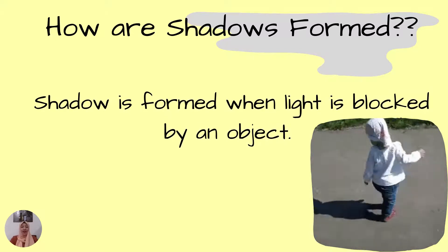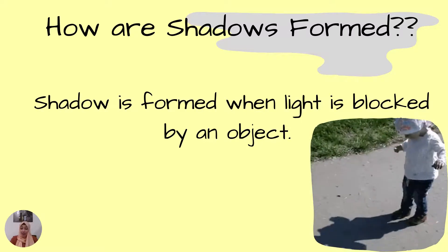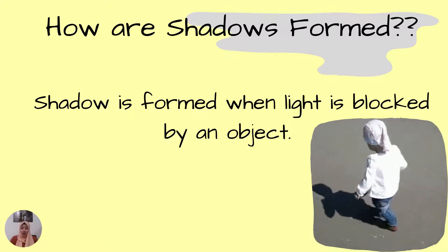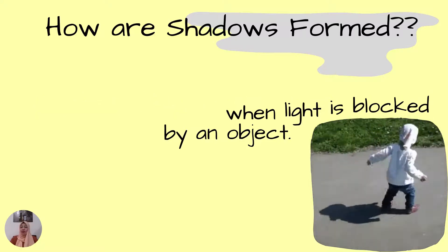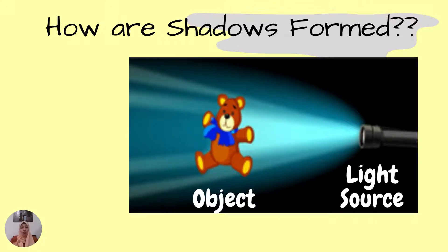A shadow is formed when light is blocked by an object — light must be blocked by an object. So from here we understand that we need a light source; there must be a light source to form a shadow. It can be natural or artificial — they are all sources of light. The second thing we need is an object to block the passage of light. Here we have the teddy.